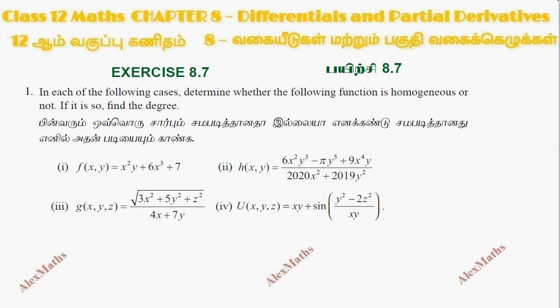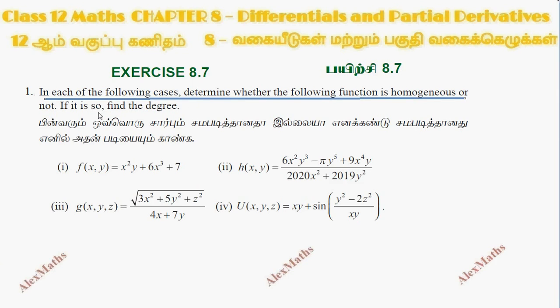Hi students, this is Alex here. x is 8.7. Question number 1: In each of the following cases, determine whether the following function is homogeneous or not. Homogeneous is equal to degree.